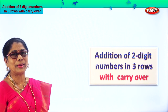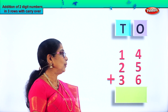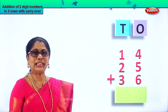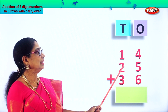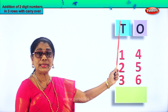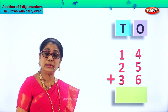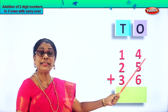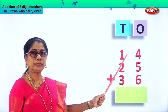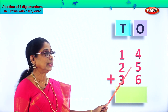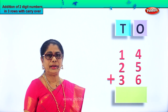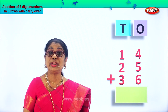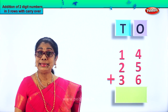Just look at our first sum. Here we are. We have arranged the numbers in tens and ones order. What is 14 plus 25 plus 36? We have three rows of numbers.